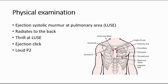On physical examination, we can hear an ejection systolic murmur at the pulmonary area, which is at the left upper sternal edge. One characteristic of pulmonary stenosis is that the murmur radiates to the back. We can also palpate for a thrill at the left upper sternal edge, and listen for an ejection click and a loud P2.